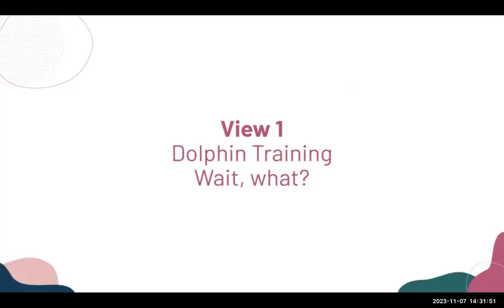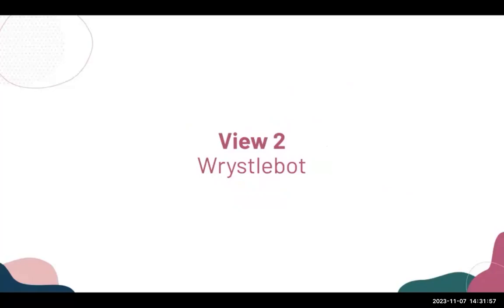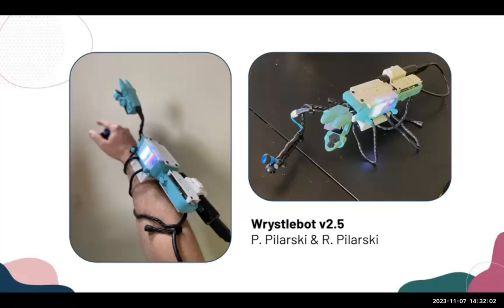I'm going to show you BristolBot — a device that is a live demo so it might just fail. It's a wrist-mounted robotic supernumerary device that I built with my six-year-old at home. It's all 3D printed and uses onboard machine learning. I'm going to put it on my arm. The minute I plug it in, it starts learning — this is one example of a device that begins learning from the moment it's powered up.